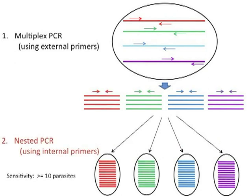The second step, nested PCR, is used to amplify one marker at a time. For each marker, a specific set of forward and reverse primers is used to amplify one type of DNA sequence. These primers are internal to the corresponding multiplex PCR product; therefore, the nested PCR product is smaller than the multiplex PCR product. After nested PCR, the products are in high concentration and can be visualized on agarose gel.